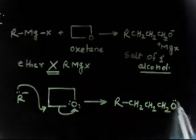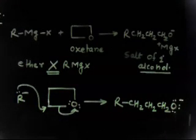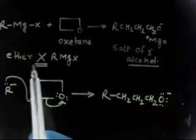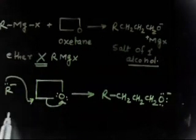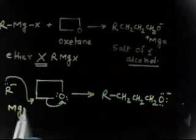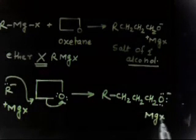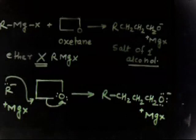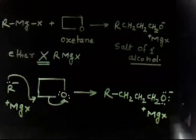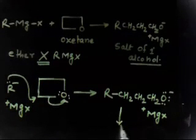And this oxygen will have now one more electron pair, so O minus. This will have O minus, and Grignard reagent contains a positive part, that is MgX plus, that will be here. So you will get a salt. If you do hydrolysis, of course, you will get alcohol.